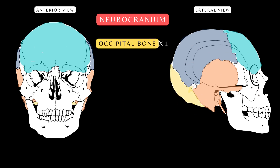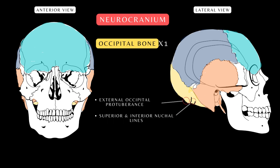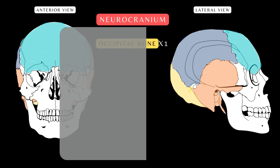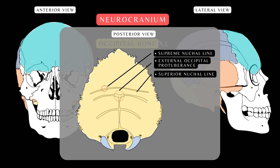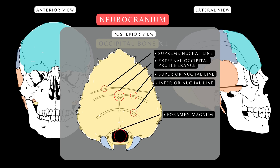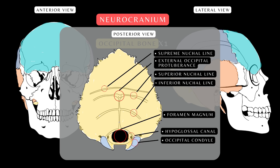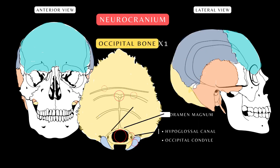The occipital bone is located at the back of the skull and forms the part of the cranial cavity known as the posterior cranial fossa. On the lateral view, the external occipital protuberance and the superior and inferior nuchal lines are observed. Here is the supreme or highest nuchal line, and the external occipital protuberance is located at the level of the superior nuchal line. Below is the inferior nuchal line. The nuchal lines in general are the attachment sites for many muscles of the neck and back. The foramen magnum is an important landmark — a transition zone between the skull and the spine. The hypoglossal canal is the foramen through which the twelfth cranial nerve, the hypoglossal nerve, exits the skull. The occipital condyles articulate with the superior articular facets of the first cervical vertebra, the atlas (C1), forming the atlanto-occipital joint.